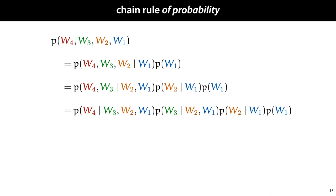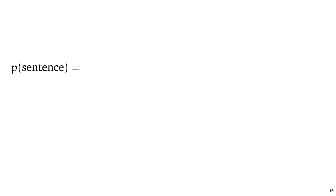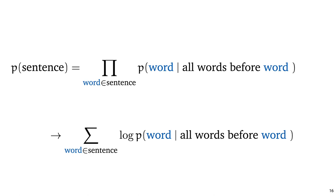Note that we could have done this in any order, but with sequences like language it makes a lot of sense to condition the probability of a word on the words that come before it. This tells us that if we build a model that can estimate the probability of a word given the words that come before it, we can chain these estimates together to give a full probability on a sentence. In other words, we can rewrite the probability of a sentence as the product of the probabilities of all the words, each conditioned on all the words that came before it. As before, we prefer to deal with log probabilities rather than plain probabilities, which turns the product into a sum.